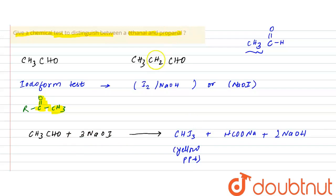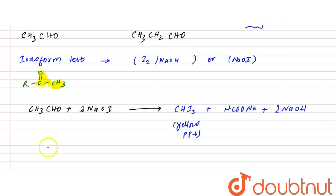But if you treat propanol, this was the yellow ppt obtained. But if you treat propanol, if you draw its structure, then CH3CH2CHO. If you treat propanol with this NaOI, that is NaOH and I2, there will be no reaction.